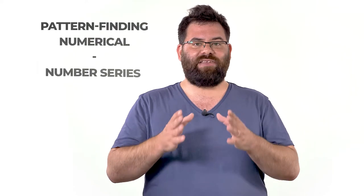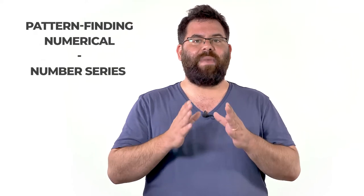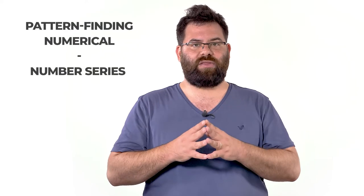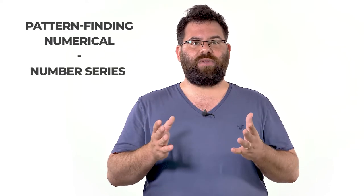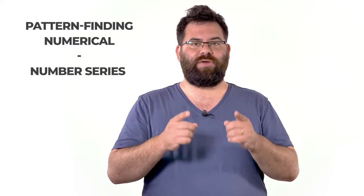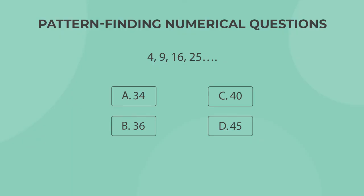The second type of questions in the cognitive section are pattern-finding numerical questions, better known as number series questions. These are some of the most dreaded questions in the world of psychometric testing and require quite a lot of practice to do well on, even if you're good at math.